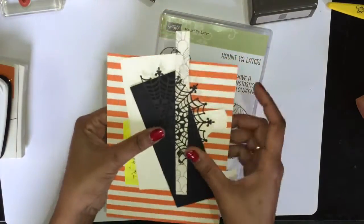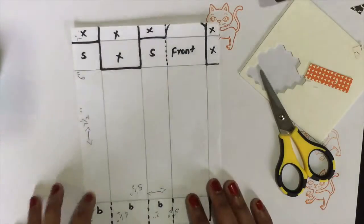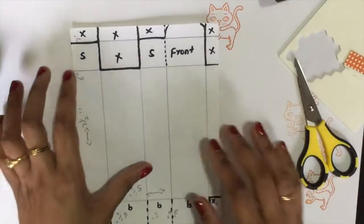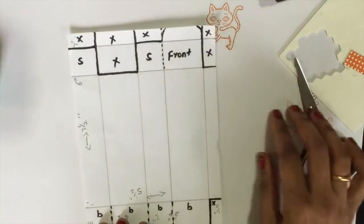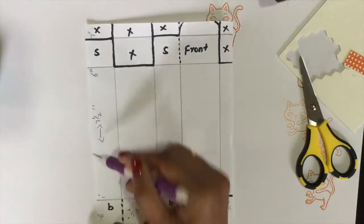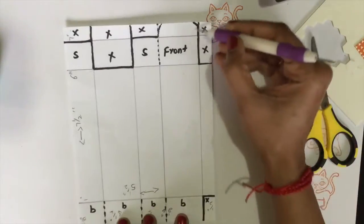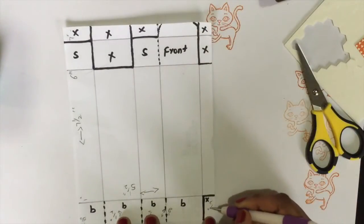Let us get started. Let me show you the template before we start cutting our designer series paper. This is the seven and a half and five and a half side. This is the half inch one.